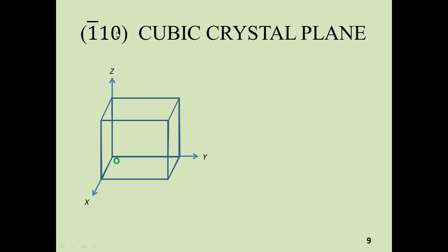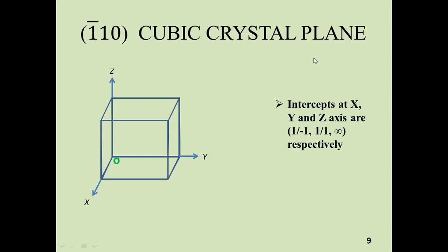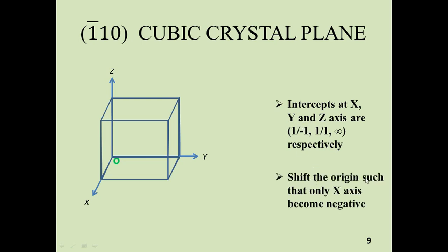Next is the (1̄10) cubic crystal plane. The intercepts at the x, y, and z-axis are: minus 1 over 1 at the x-axis, 1 at the y-axis, and infinity at the z-axis respectively. The intercept is negative only at the x-axis. So shift the origin such that only the x-axis becomes negative. Drop the origin from this position; your new origin is this one. When you move in this direction, this is the negative x-axis, but the y-axis and z-axis are still positive.